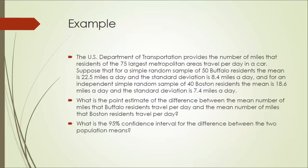Next, let's take a look at one example. The U.S. Department of Transportation provides the number of miles that residents of the 75 largest metropolitan areas travel per day in a car. Suppose that for a simple random sample of 50 Buffalo residents, the mean is 22.5 miles a day and the standard deviation is 8.4 miles a day. And for an independent sample of 40 Boston residents, the mean is 18.6 miles a day and the standard deviation is 7.4 miles a day. What is the point estimate of the difference between the mean number of miles that Buffalo residents travel per day and the mean number of miles that Boston residents travel per day? What is the 95% confidence interval for the difference between the two population means?